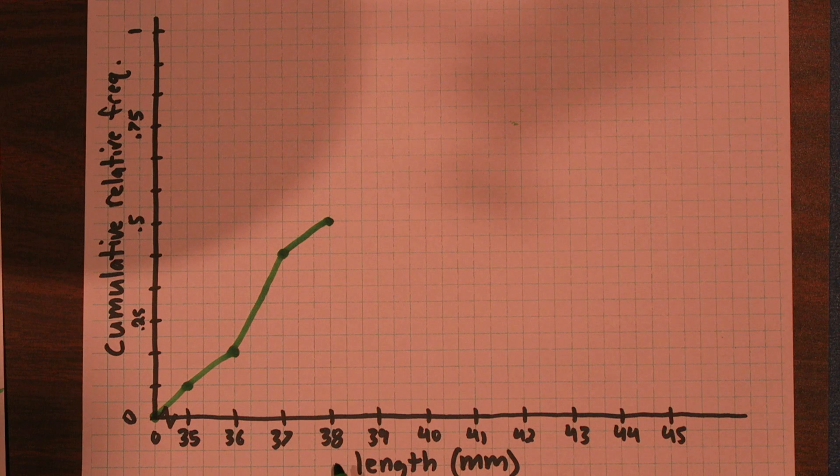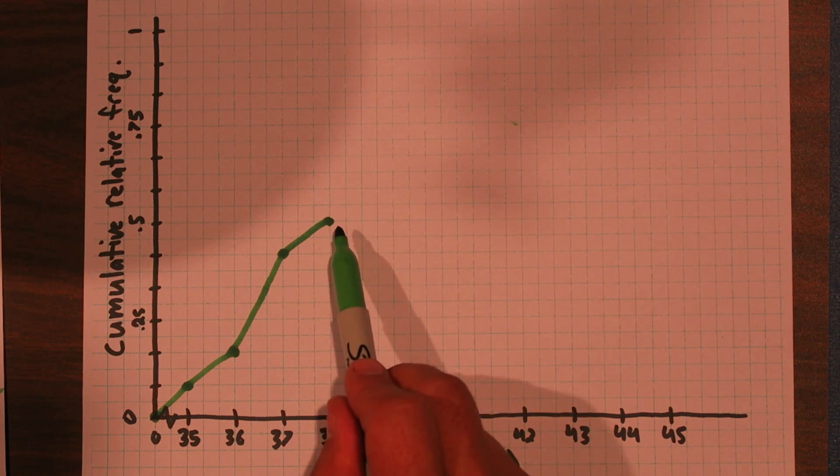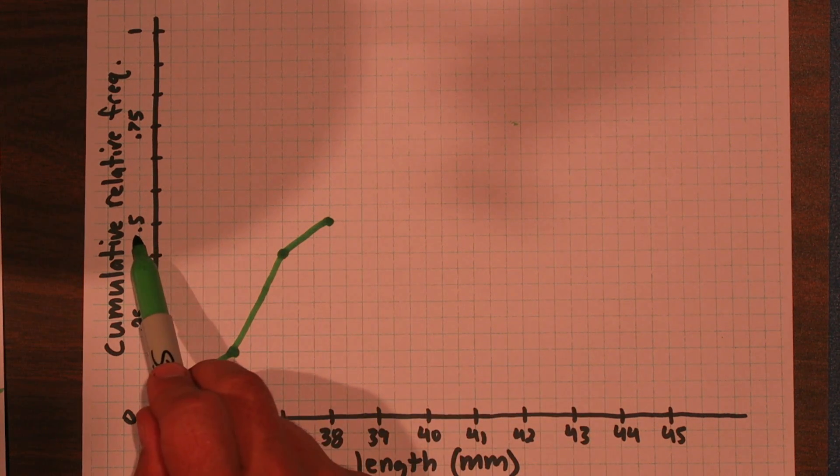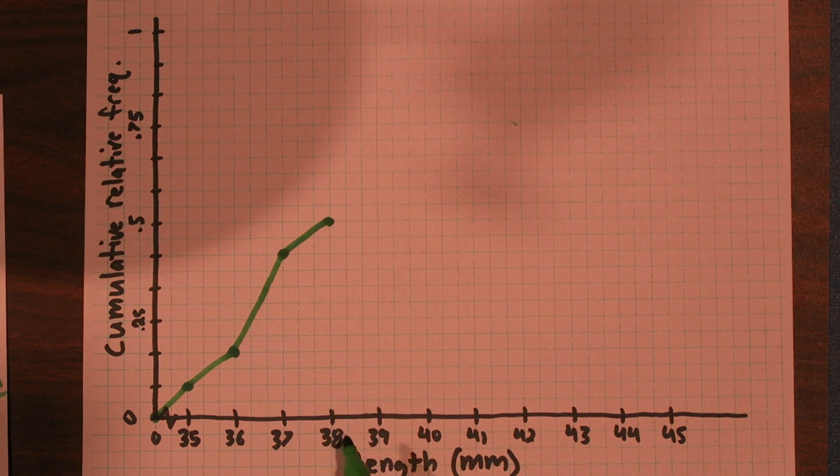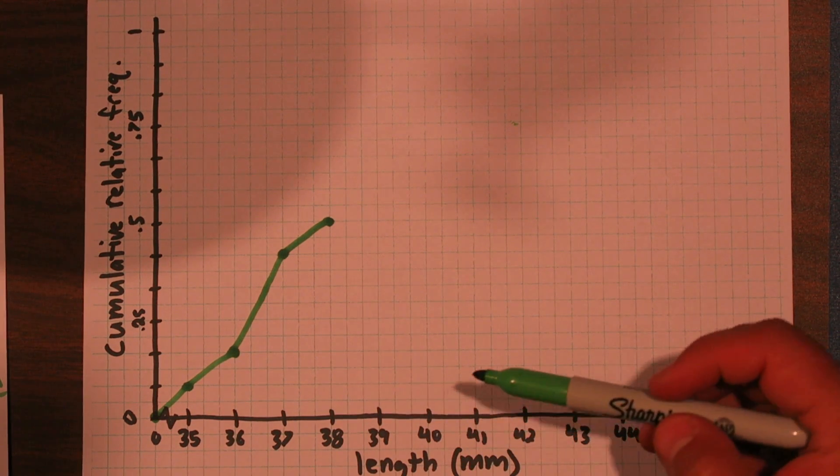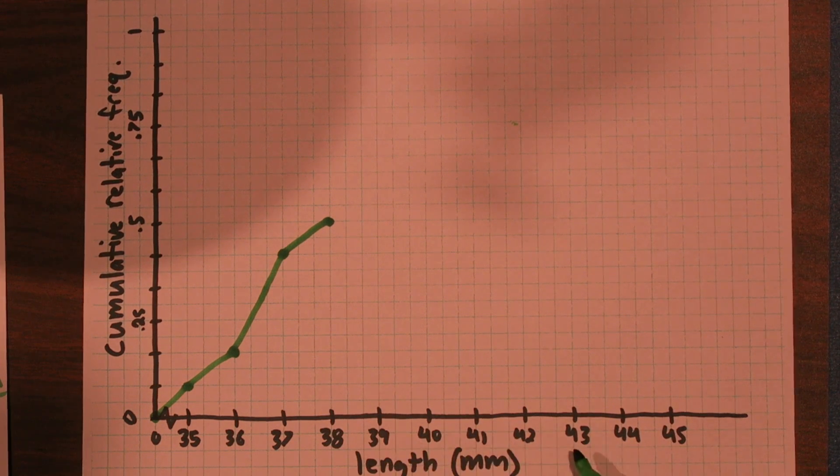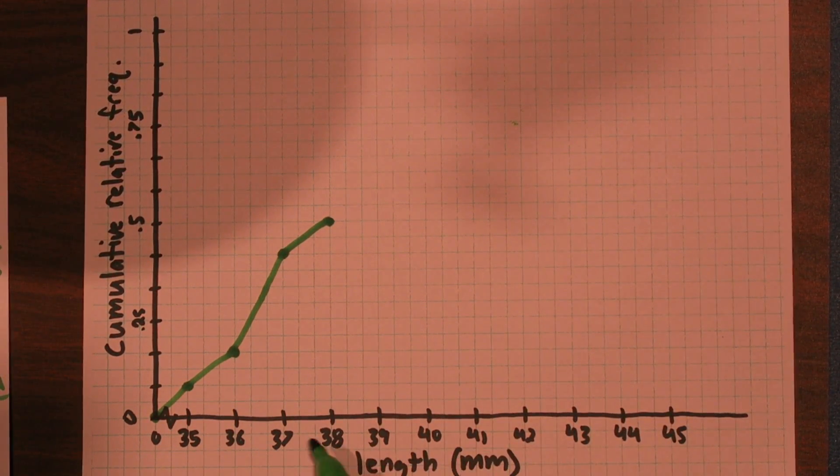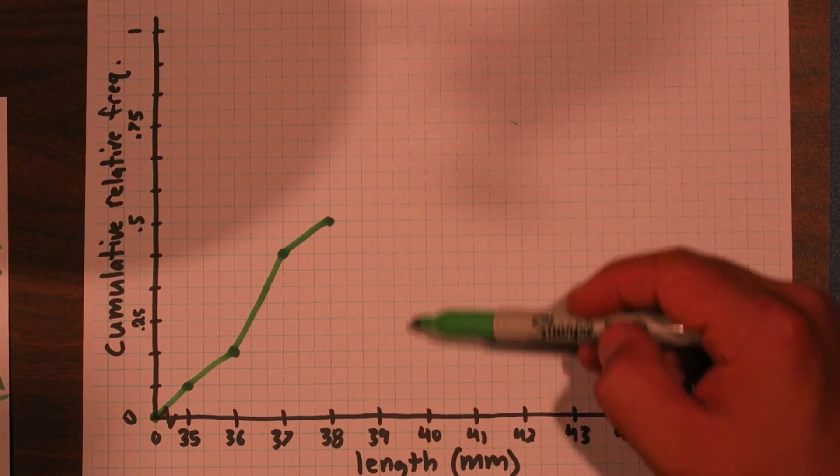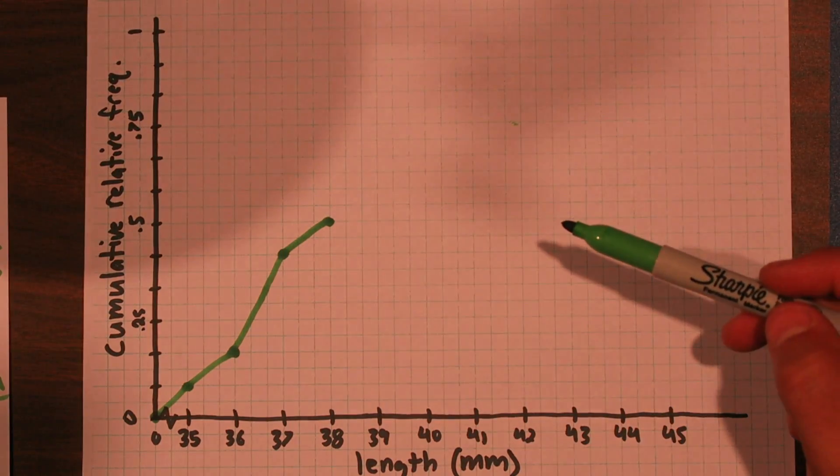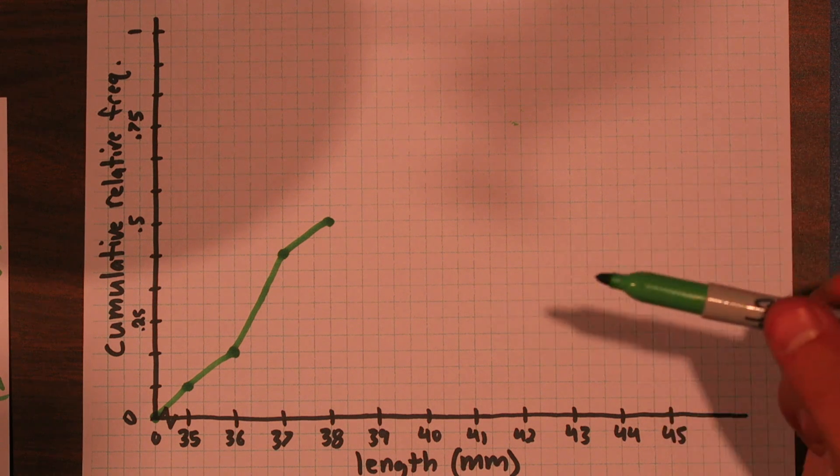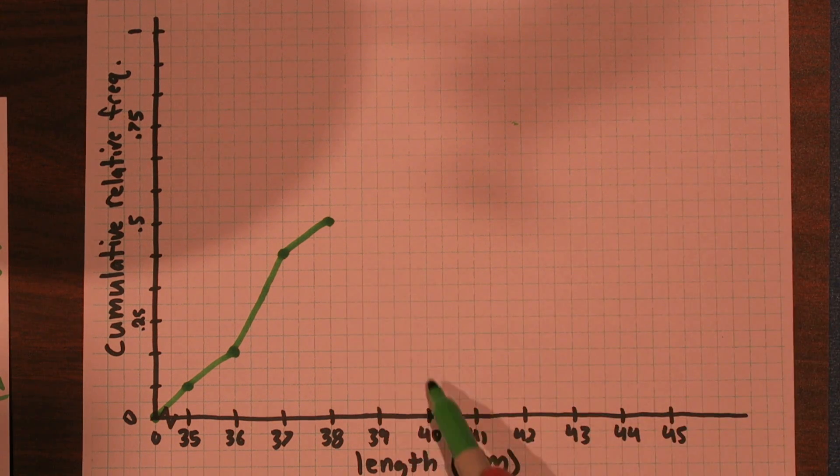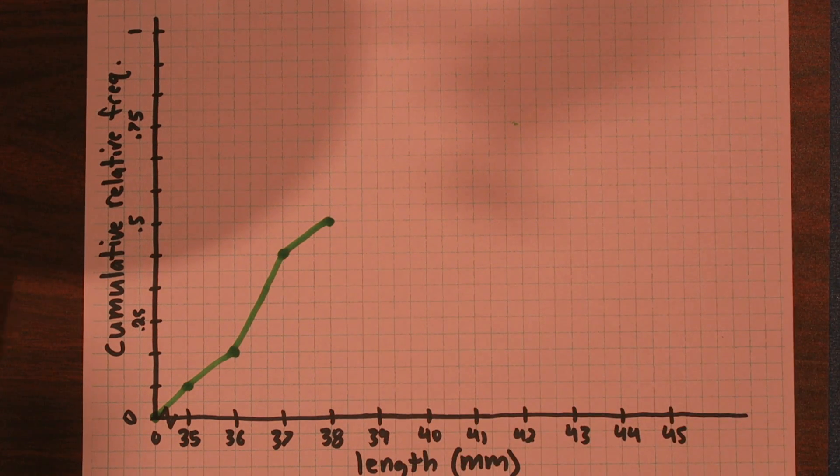Here's what this is saying. At 38, I'm saying 50% of my acorns, because we're at 0.5, were 38 millimeters or less. So that's what an ogive tells you. The x-axis tells you a particular length. You can look up a length on the x-axis. And the y-coordinate is going to tell you what percent of acorns were that value or lower in length. I'm going to speed up the next part as I finish my ogive here.